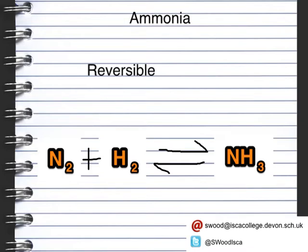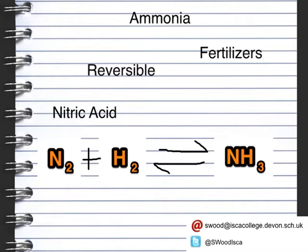Ammonia can be used for a number of things. It can be used for the production of nitric acid, it can be used in fertilisers, and it can be used for explosives.